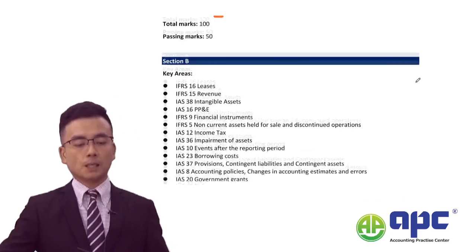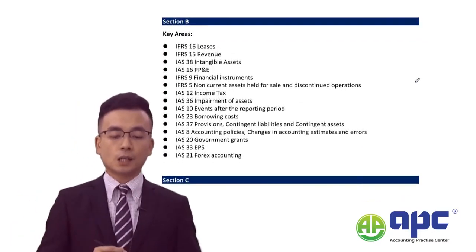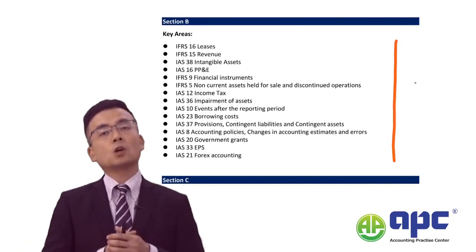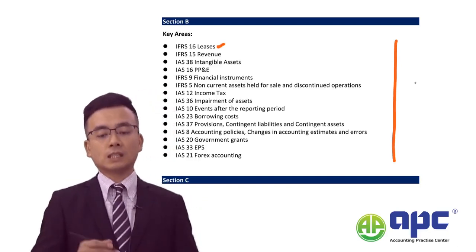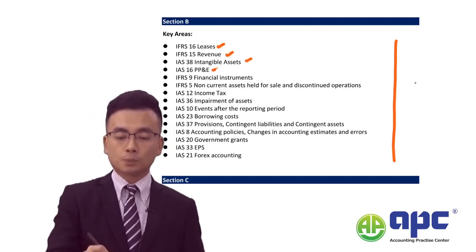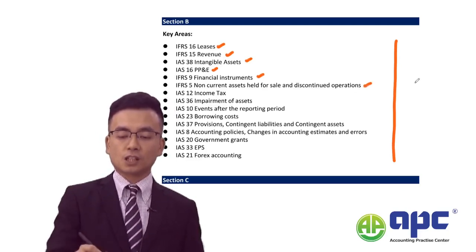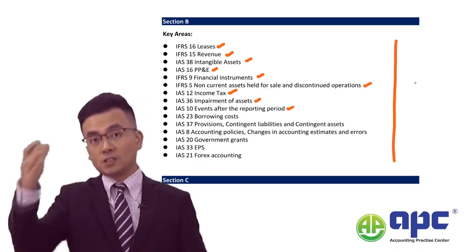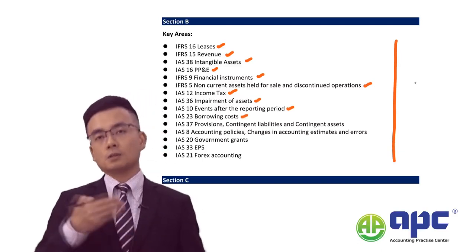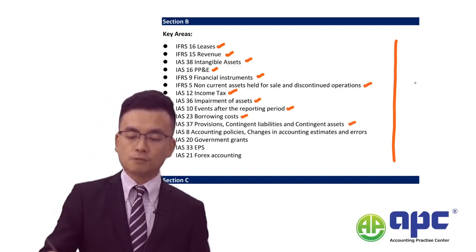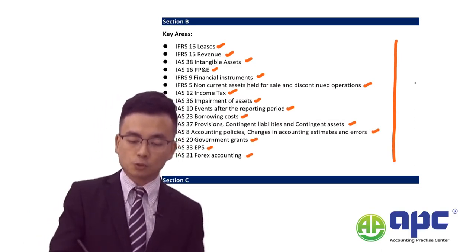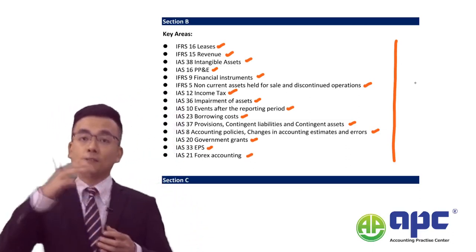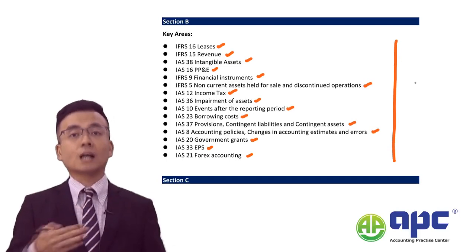For Section B, the examiner has his own preferences, and certain areas come up in each and every sitting. These include leases, revenue, intangible assets, property plant and equipment, financial instruments, non-current assets held for sale, deferred taxes, impairment, events after the reporting period, borrowing costs, provision liabilities, changes in accounting policies and estimates and errors, government grants, earnings per share, and foreign exchange accounting. Any three of those will be tested in each exam.